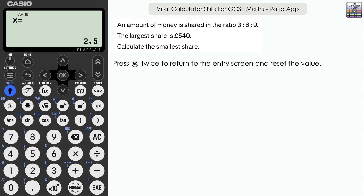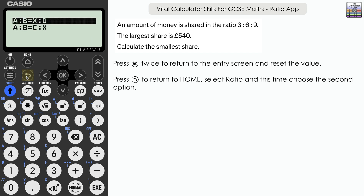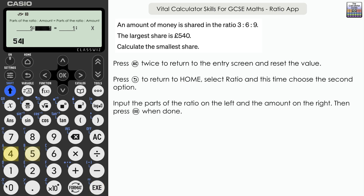An amount of money is shared in the ratio 3 to 6 to 9. The largest share is £540 — calculate the smallest share. This is a three-part ratio, but we only need two shares in the input. Exit back out and select the second option. We link the largest share: 9 parts is equivalent to £540. Then the smallest share is 3 parts. Press Execute twice — 3 parts is equivalent to £180. Read the question carefully and you can handle three-way ratios this way.